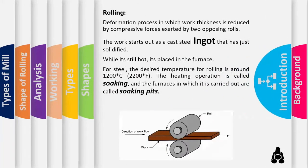Rolling operation is a deformation process in which work thickness is reduced by compressive forces exerted by two opposing rolls. These rolls not only pull the workpiece into the gap by their rotation, but once the workpiece enters the gap, they apply compressive forces to reduce the thickness of the slab. To clarify a point from the last lecture: the rolls are pulling the workpiece into the gap and applying compressive forces to reduce the cross-section or thickness.